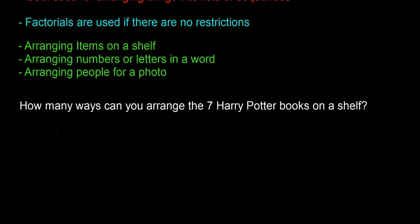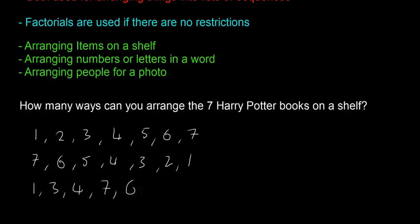For example, if we were to start doing this manually, we could put them in order: 1, 2, 3, 4, 5, 6, and 7. Or we could put them in reverse order: 7, 6, 5, 4, 3, 2, and then 1. Or else we could put them in a random order like 1, 3, 4, 7, 6, 2, and then 5.